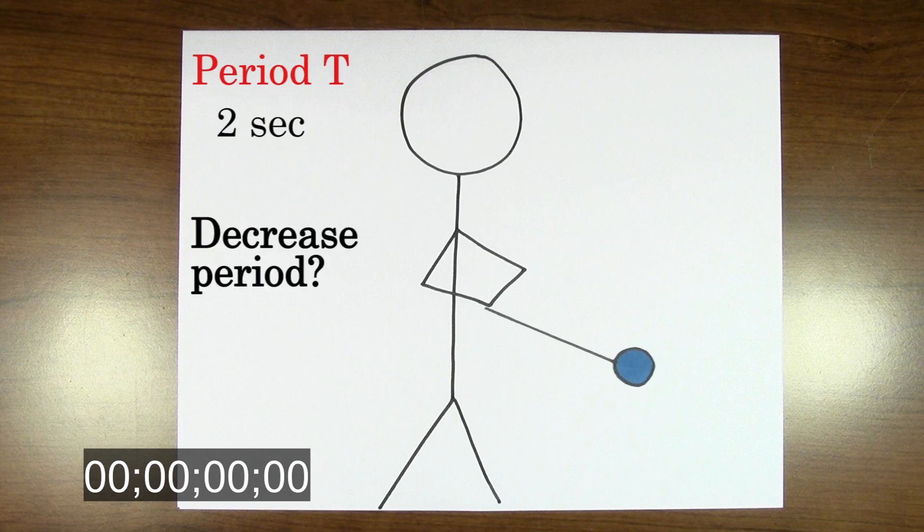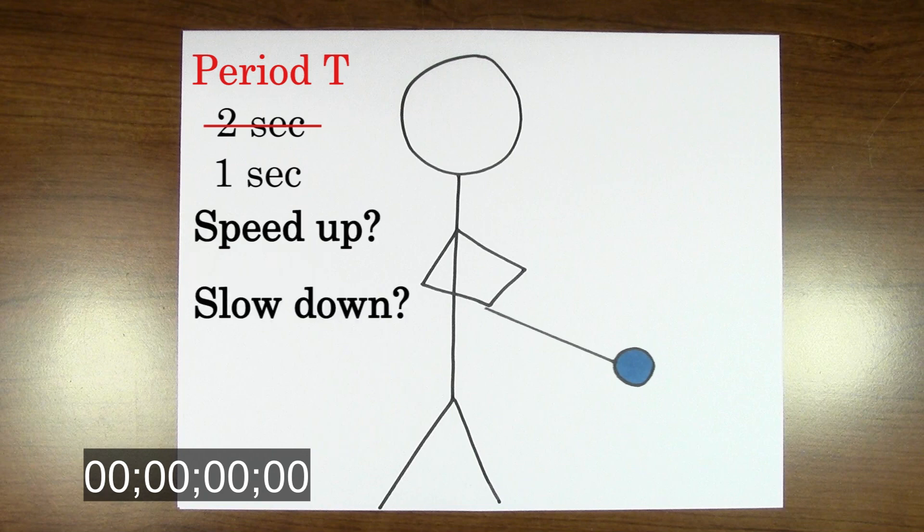What would happen if we decrease the period of the yo-yo? Let's say we decrease the period of the yo-yo to only one second. Would the yo-yo speed up or slow down?